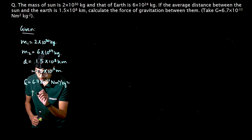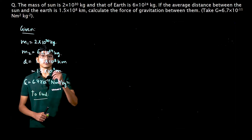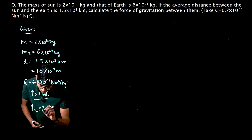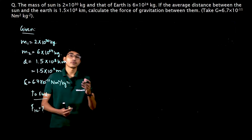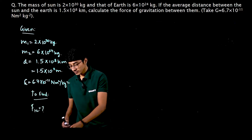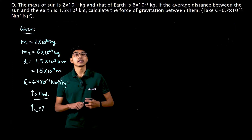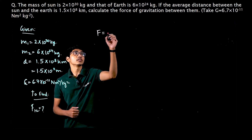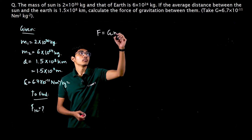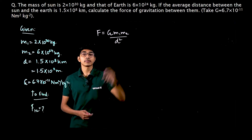Now let's write what we have to find. In this question we have to find the force between sun and earth, so we have to find F, or I can also write this as F12, that is the force of gravitation between object one and object two, that is the sun and the earth. This question is very simple. We have to use the formula: force of gravitation is G multiplied by m1 m2 upon d square.